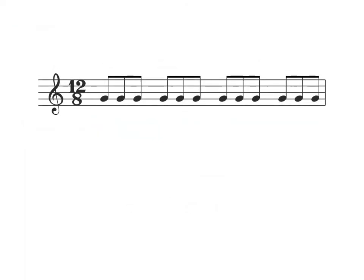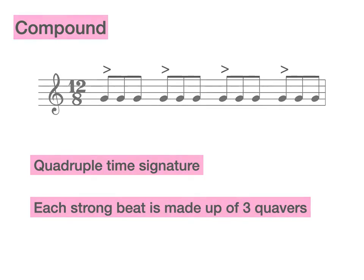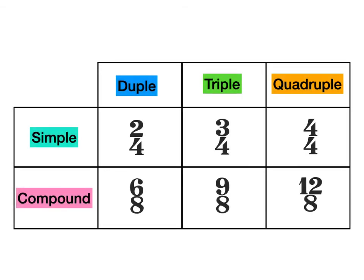And what about 12/8? Is this simple or compound? That's correct, it's compound. We already know it's a quadruple time signature and each of those strong beats divides into three quavers. Let's add the words simple and compound to our table. As you can see, to the left we have our duple time signatures: 2/4 is our simple time signature and 6/8 is our compound time signature.